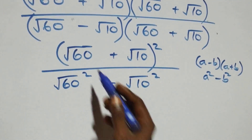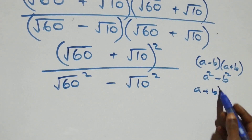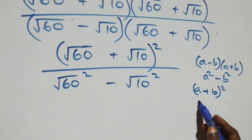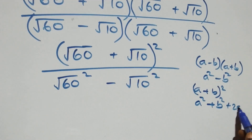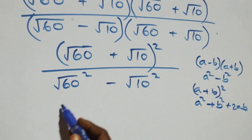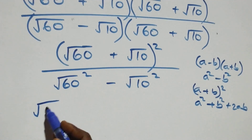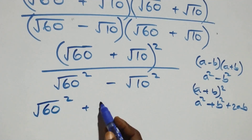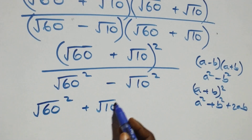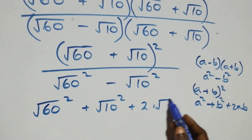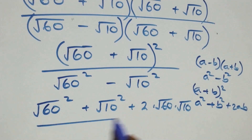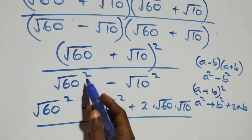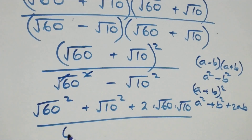Expanding the numerator using a plus b all squared equals a squared plus b squared plus 2 times a times b, we get root 60 squared plus root 10 squared plus 2 times root 60 times root 10. The denominator becomes root 60 squared, where the square cancels the square root to give 60, minus root 10 squared, which gives 10.